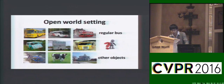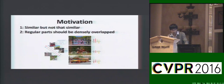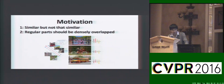Note that we only have regular object images and other object images as training data. There are two simple intuitive ideas motivating our proposed method. First, unusual object images should be similar to regular object images, but not that similar.